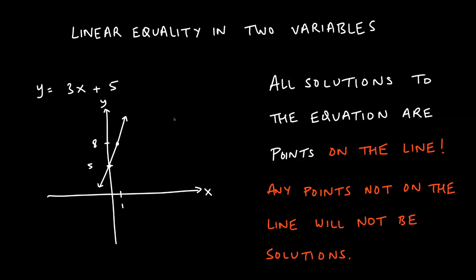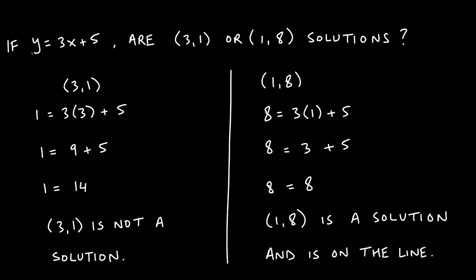Those are the two ways to graph linear equations. Remember that all solutions to this equation are points on the line itself. A point on the line is a solution; a point not on the line is not a solution. This will be in contrast with what we're about to see next with inequalities.